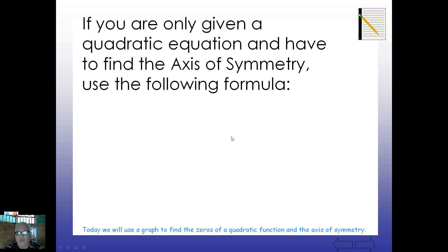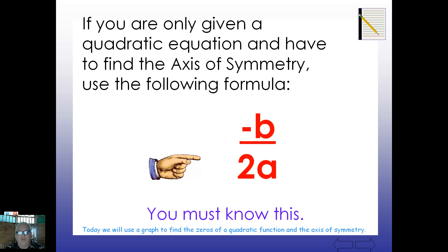Now if you're only given a quadratic equation and you have to find the axis of symmetry, use the following formula. Now this has to go into your notebook, onto your note card. Negative b over 2a. Negative b over 2a. Remember those a's, b's, and c's we were looking at? We need to be able to identify the a's and b's and c's pretty soon. But we have to know this formula here, negative b over 2a. So make sure this gets put into your notebook for sure.